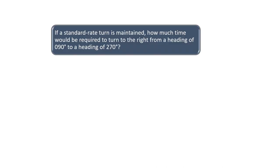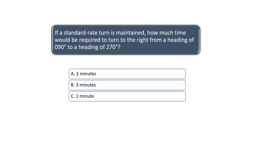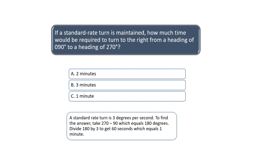If a standard rate turn is maintained, how much time would be required to turn to the right from a heading of 090 degrees to a heading of 270 degrees? A standard rate turn is 3 degrees per second. To find the answer to this question, subtract 90 from 270 which equals 180 degrees. Divide 180 by 3 to get 60 seconds which equals 1 minute. The correct answer is C, one minute.